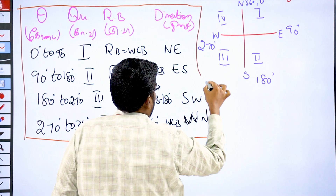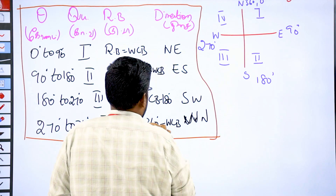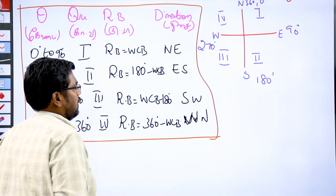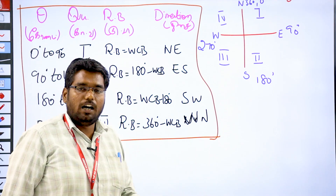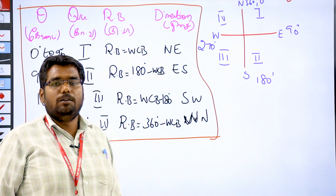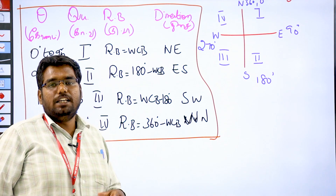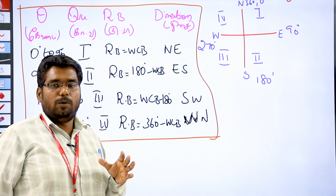If you want to convert reduced bearing or whole circle bearing, you can use this tabulation — easy to find out.